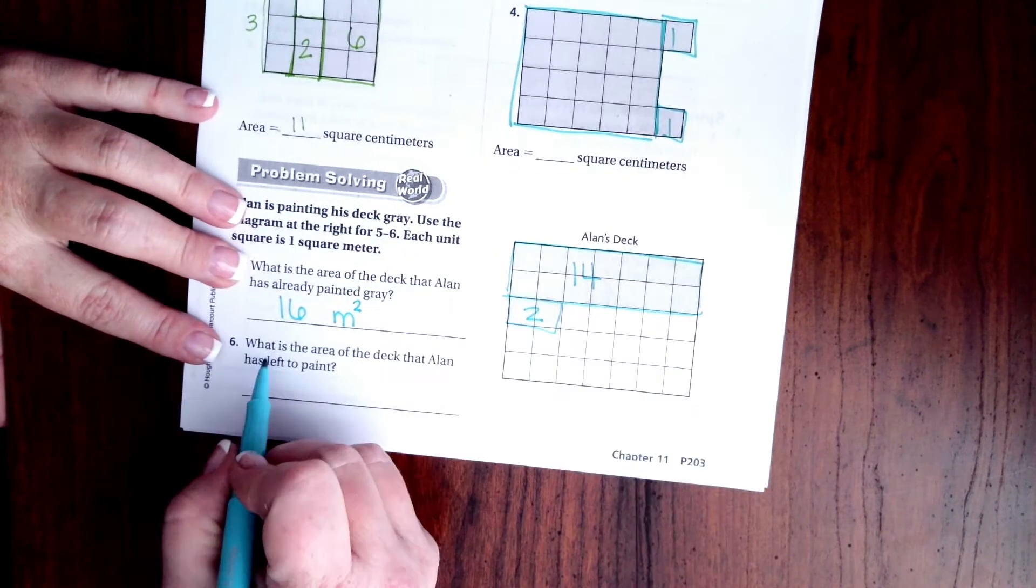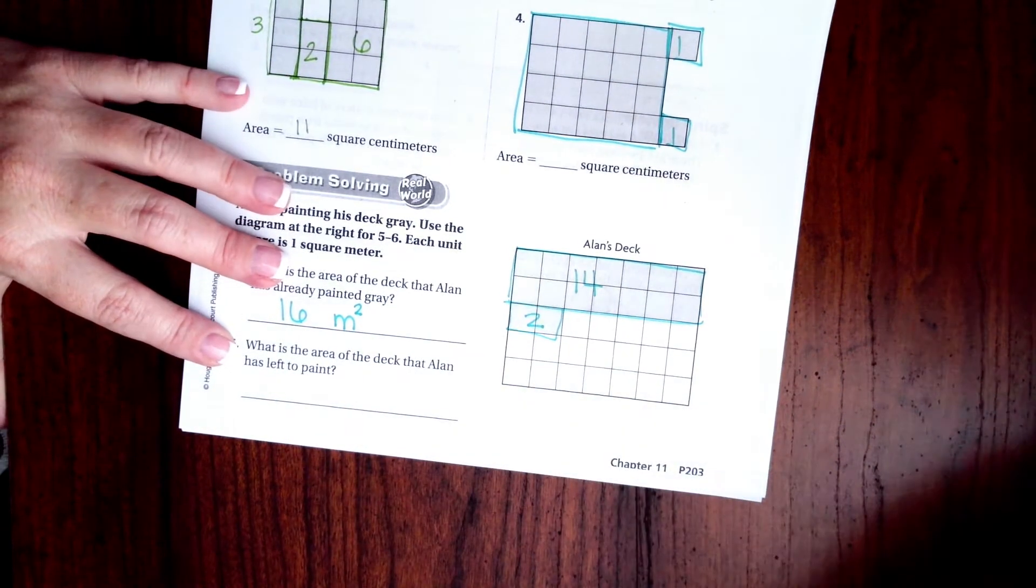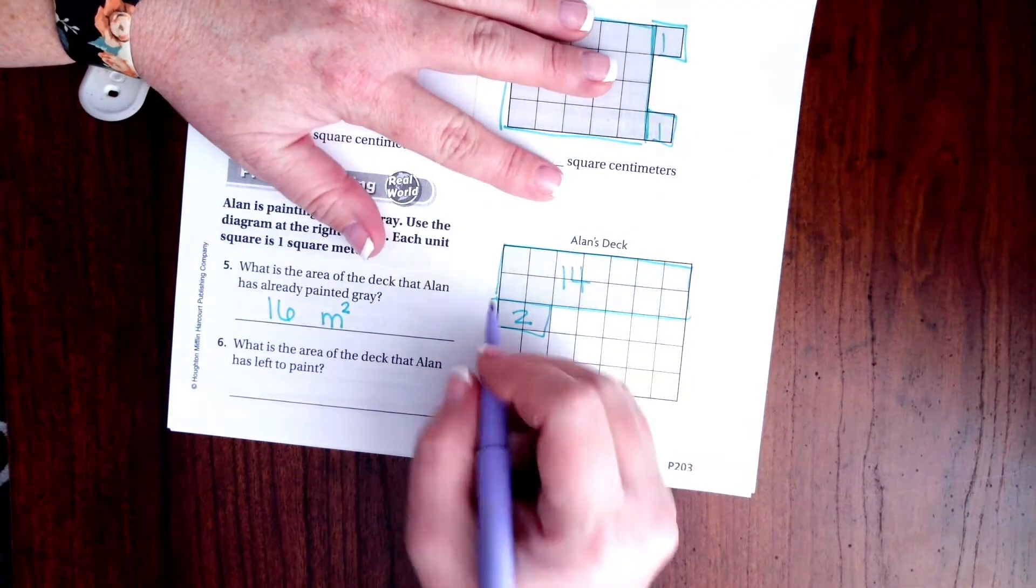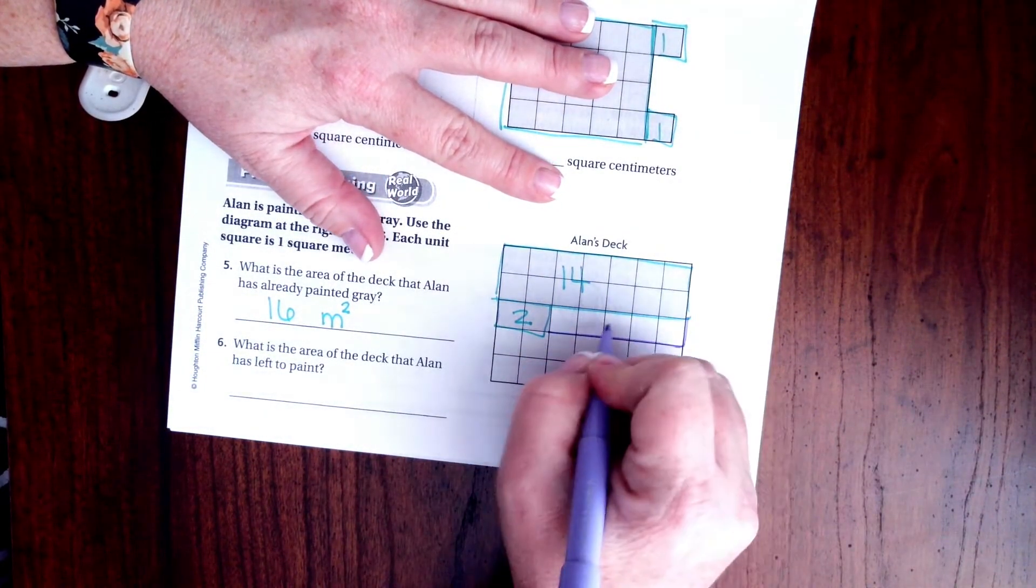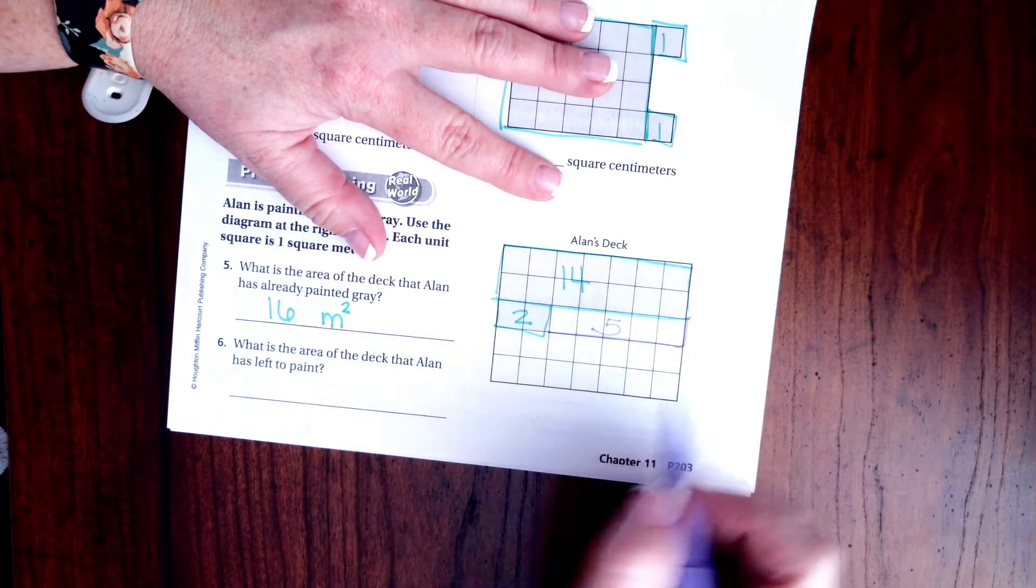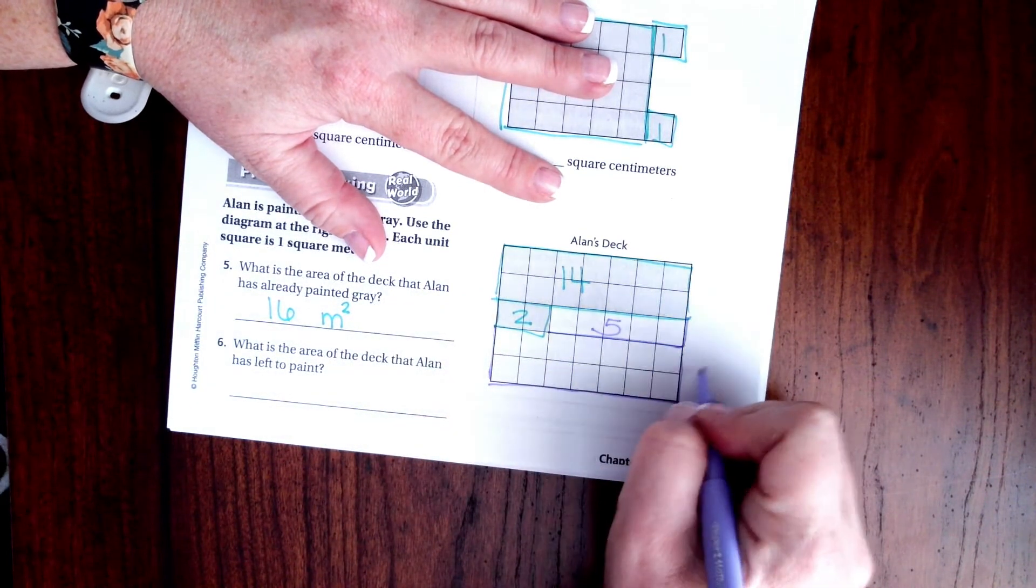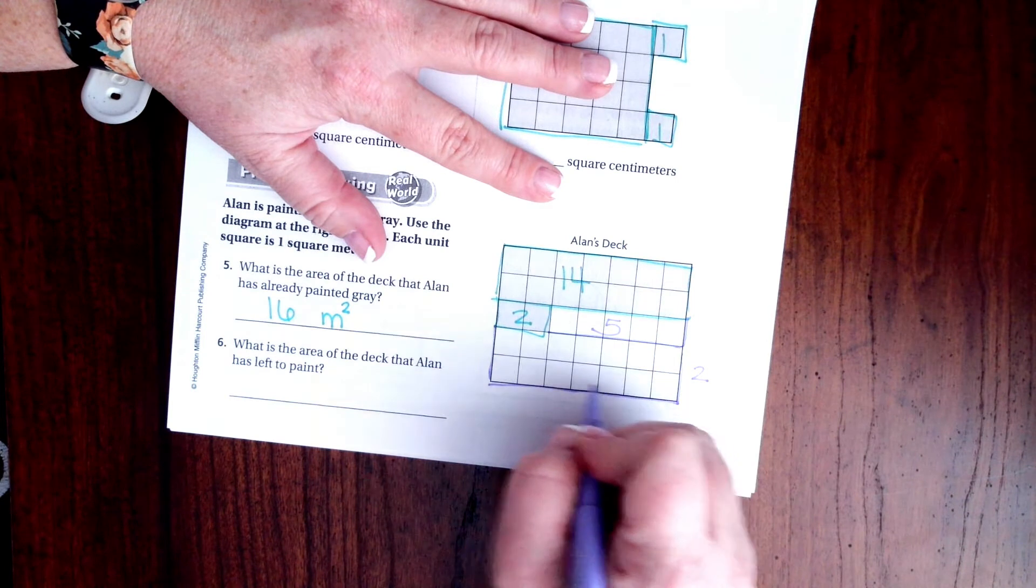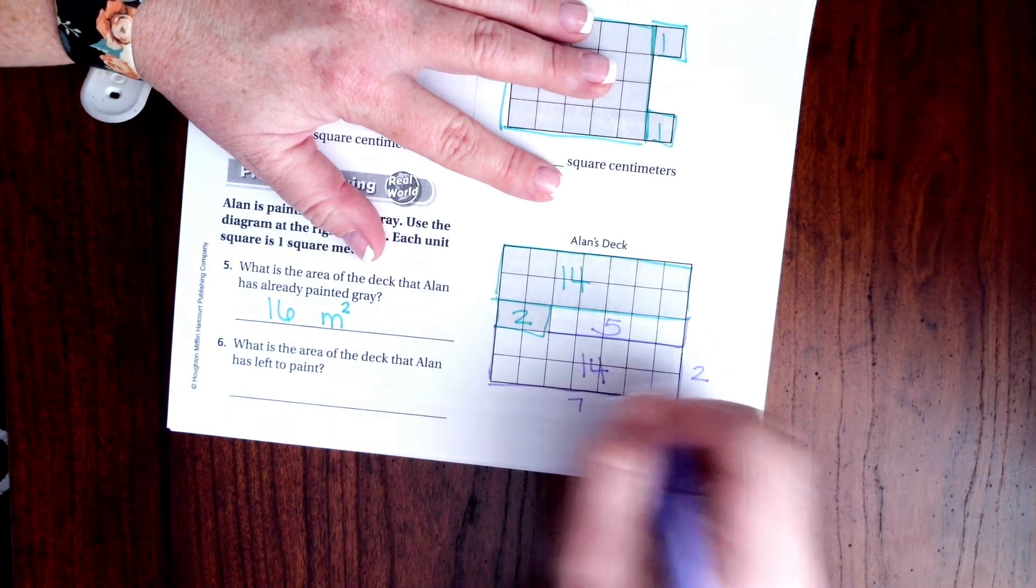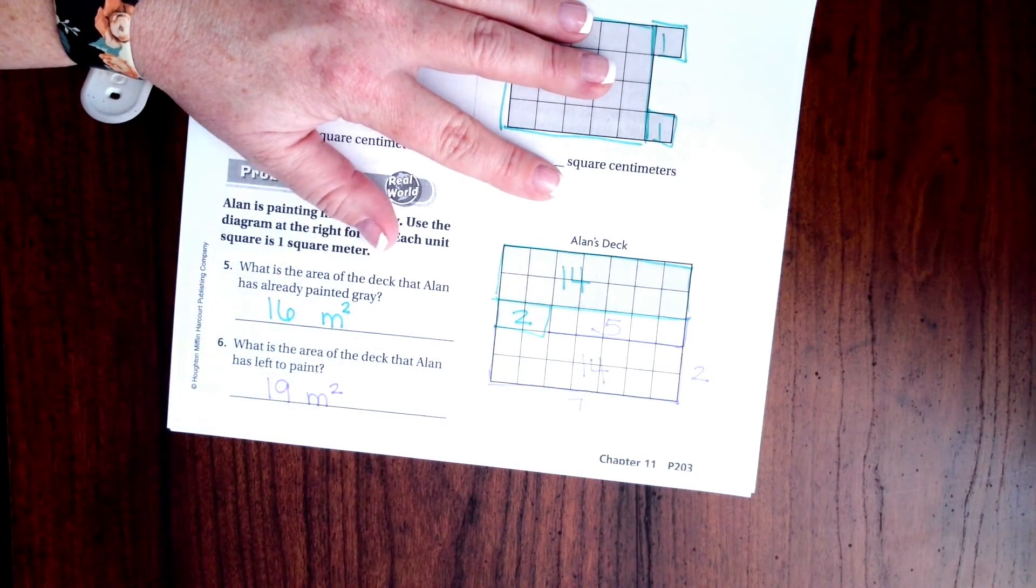All right. What is the area of the deck that Alan has left to paint? So now, I'm going to come over here, and I'm going to go... This one is going to be 5, because 5 times 1 is just 5. And this is 2 times 1, 2, 3, 4, 5, 6, 7. So this one is 14. So 14 plus 5, well, that's 19 meters squared.